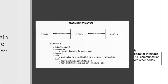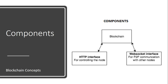The components of a blockchain consist of two basic things: the HTTP interface, which we will use for our localhost server, and the WebSocket interface, which we will install with our plugins. Both are important when it comes to the component section of a blockchain. Let us get started with the next section where we will start coding the block and hashing concepts.